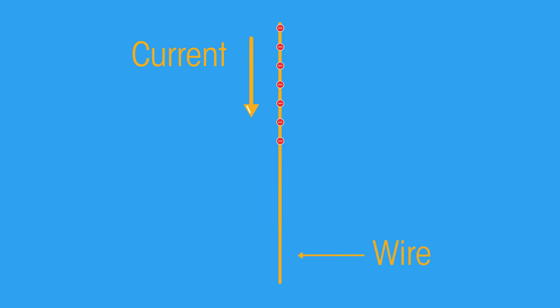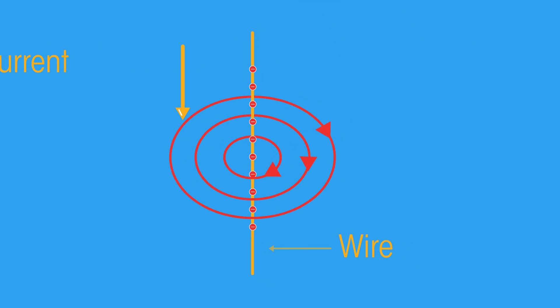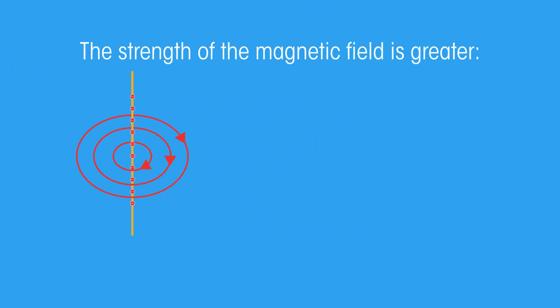When a current flows in a wire it creates a circular magnetic field around the wire. The strength of the magnetic field is greater when it's closer to the wire.